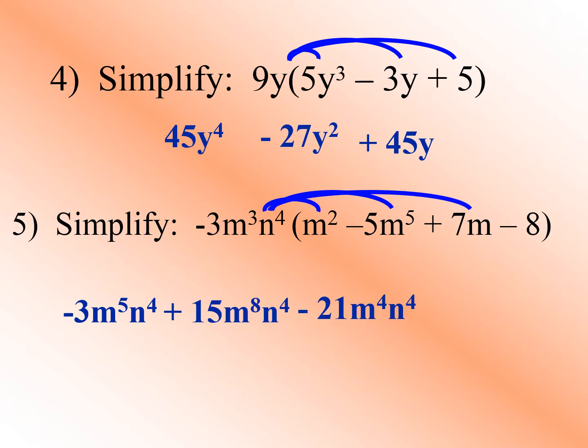Next: negative 3m³n⁴ times 7m. Multiply the coefficients: negative 3 times positive 7 gives us negative 21. Copy variable m, add exponents: 3 plus 1 gives us 4. Since 7m has no variable n, just copy n⁴. So this term is negative 21m⁴n⁴.